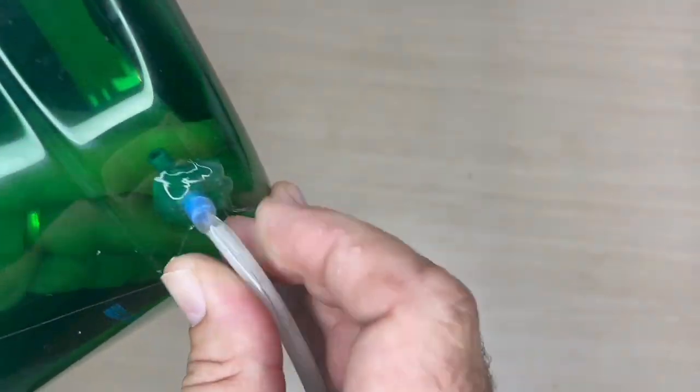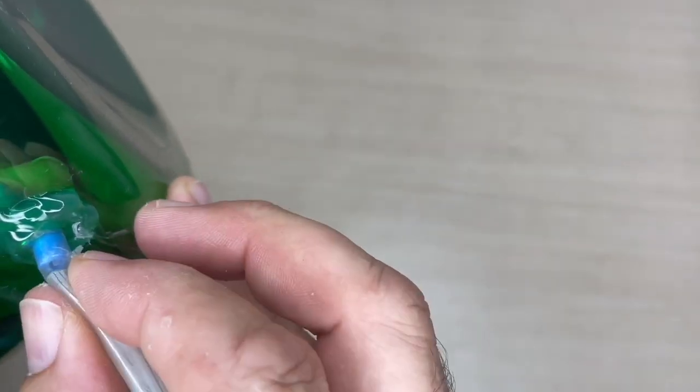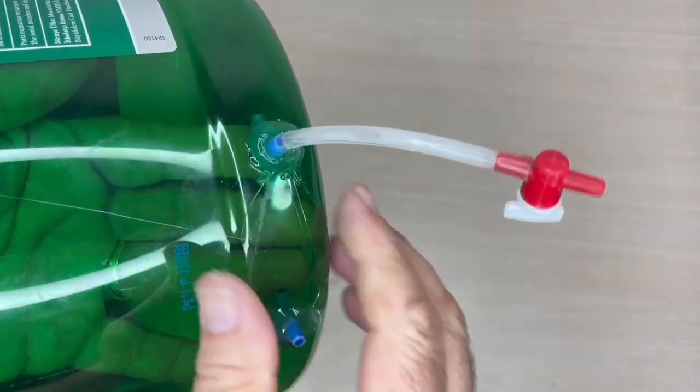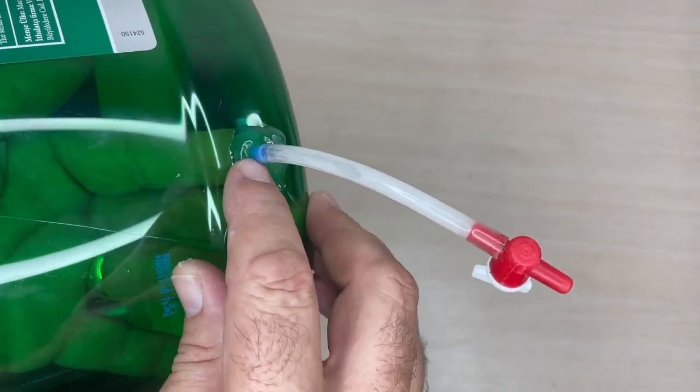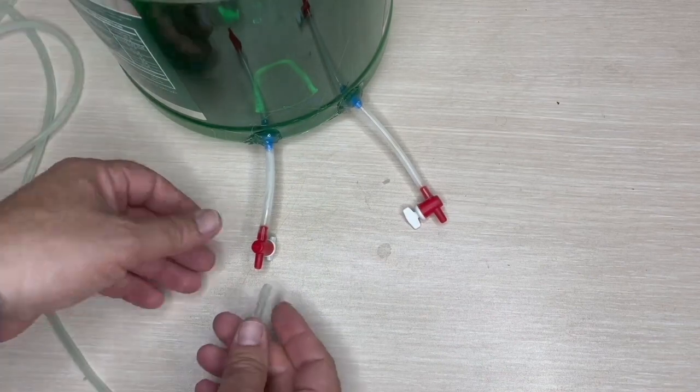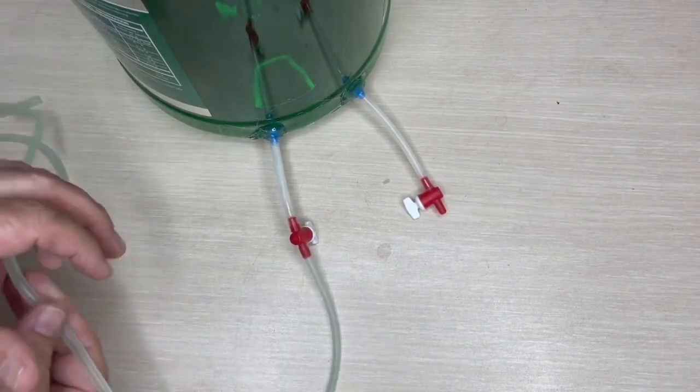Then, in order for you to adjust the water flow, we use the valve that will provide water flow at the other end while fixing the air hose which is also used in aquariums to this end. You complete the process by attaching the hose of the desired length to the end of the valve.